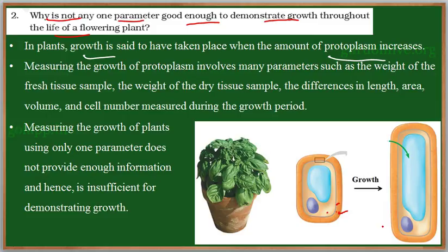Growth is generally defined as an increase in the amount of protoplasm. Protoplasm includes the nucleus and the cytoplasm. So if the nucleus and cytoplasm content has been increased, we say growth has taken place. However, measuring the growth of protoplasm is not easy — it involves many parameters.